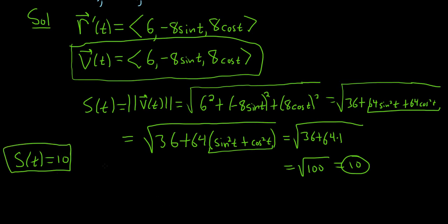To find the acceleration, which is the last thing to find, all we have to do is take the derivative of velocity. So the acceleration, as a function of time, is equal to angle bracket. So the derivative of 6 is 0. Here the derivative of sine is cosine, so we get negative 8 cosine t. And the derivative of cosine is negative sine, so we get negative 8 sine t. And that would be our acceleration.